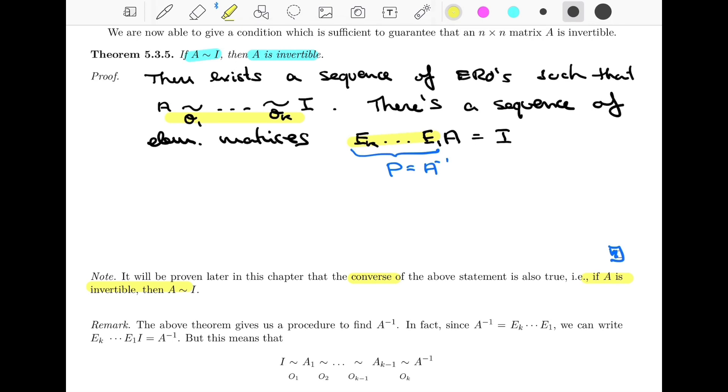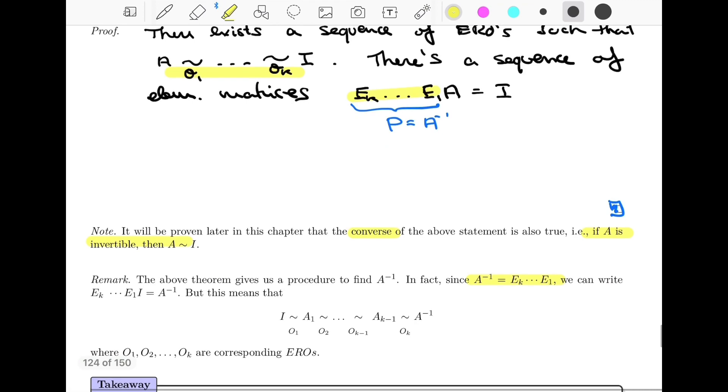But even more important, the second remark says that the above theorem gives us a procedure to find A inverse, right? And why is that? Well, we just remarked that EK all the way to E1, that product we just said is equal to A inverse. In other words, A inverse equals EK times EK minus 1 all the way to E1.